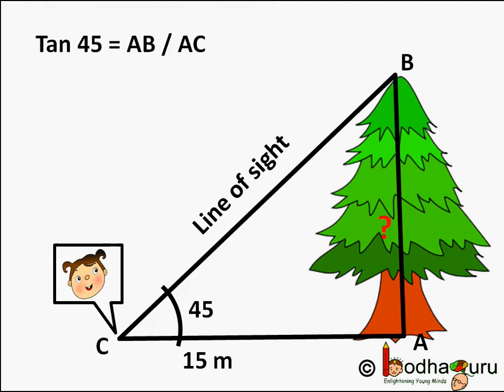So we need to find the height. We can use the tangent formula, that is opposite side by adjacent side. So tan of 45 degrees: the opposite side of angle ACB is AB, and the adjacent side is AC. So tan of 45 equals AB by AC.